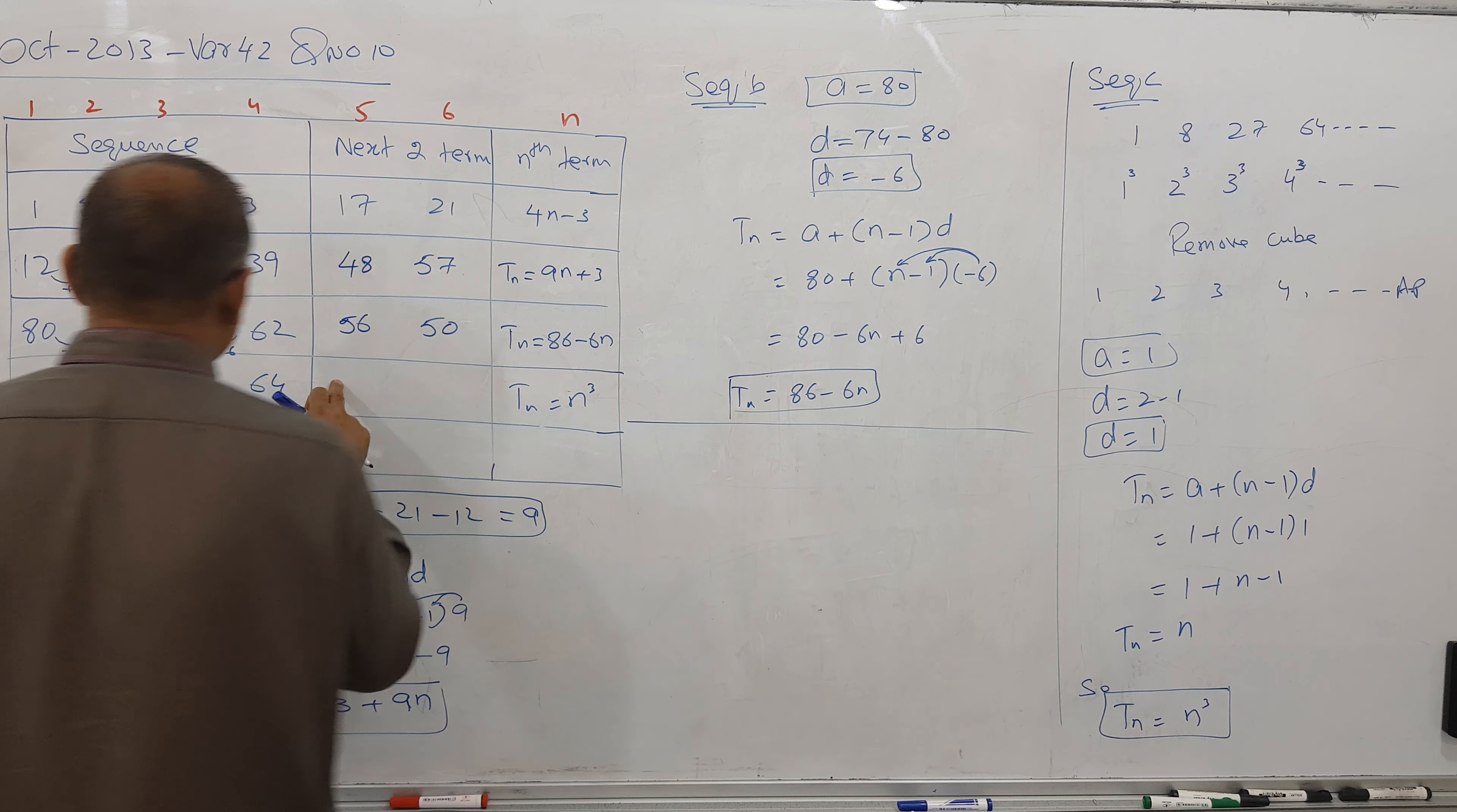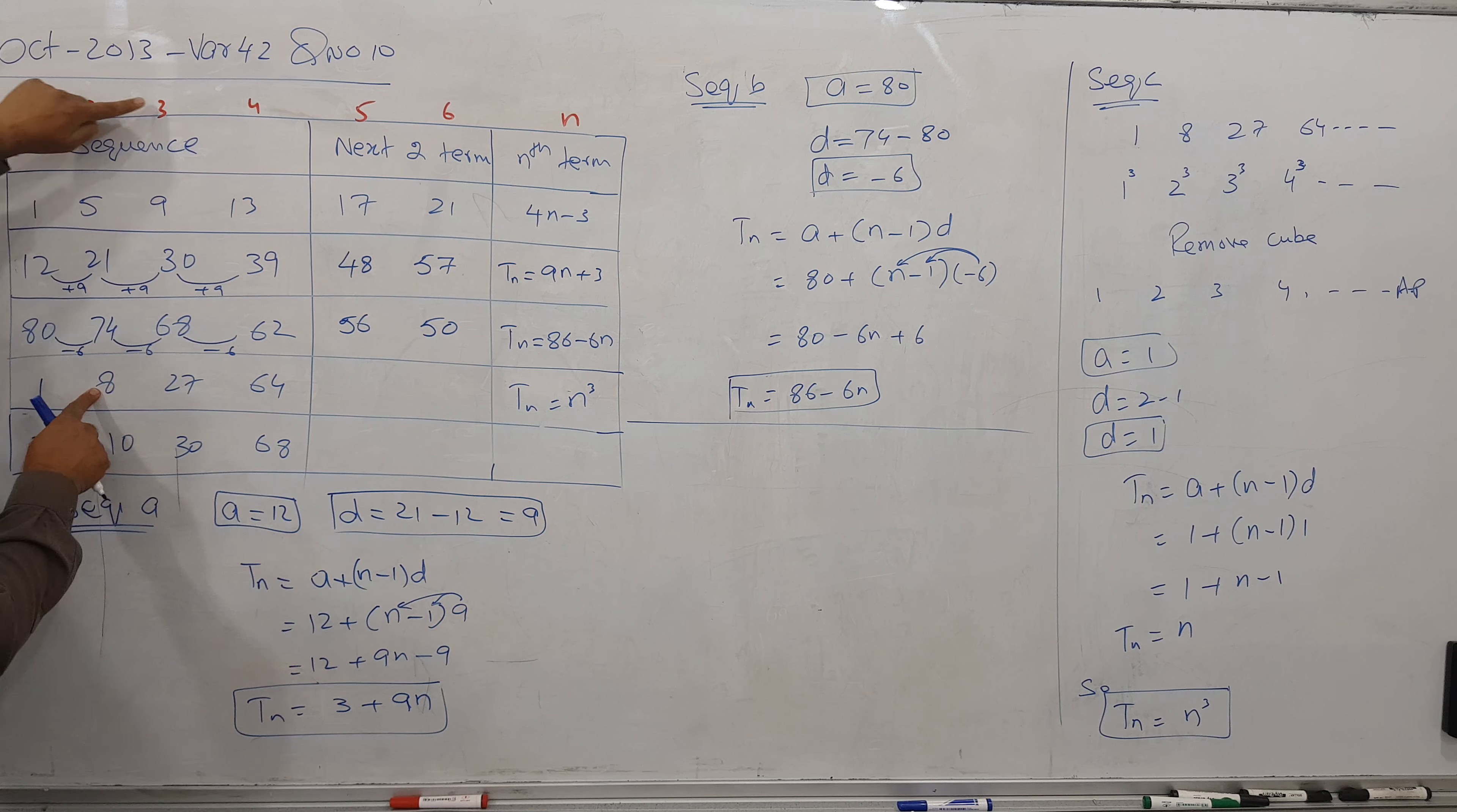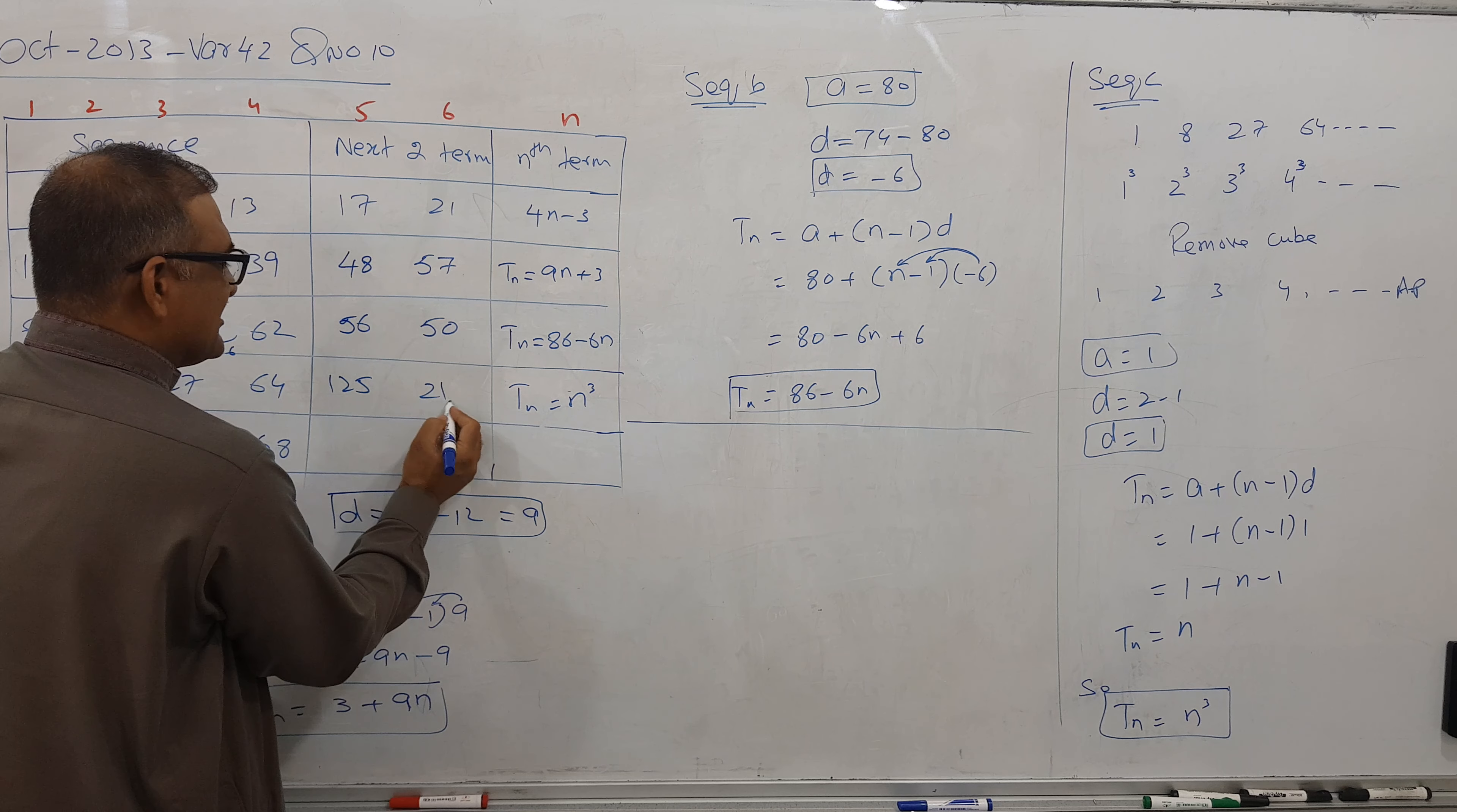If I'm looking for this term, for example put 2 here, 2 cube is 8. 3 cube is 27. 5 cube is 125. And put 6 here, 216.